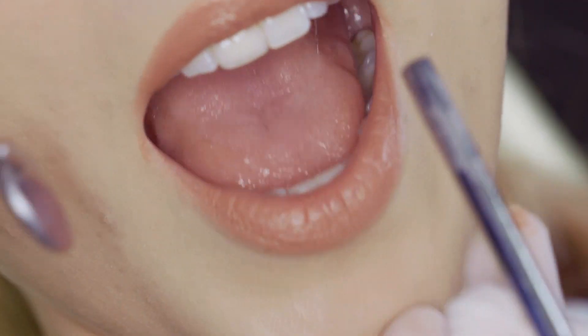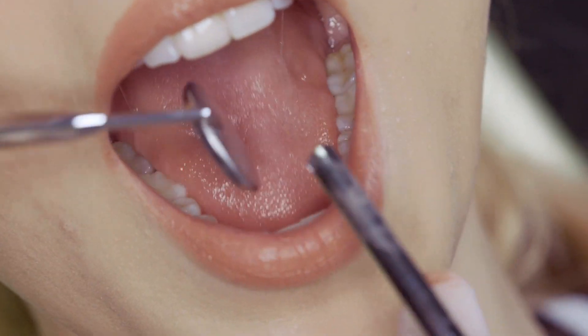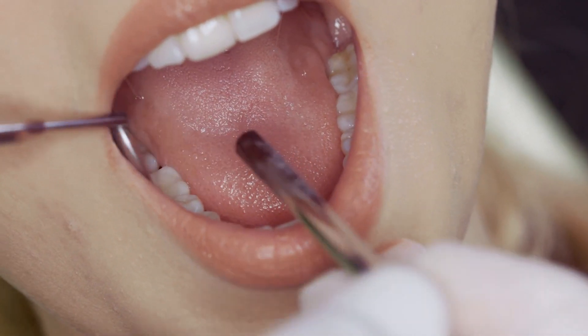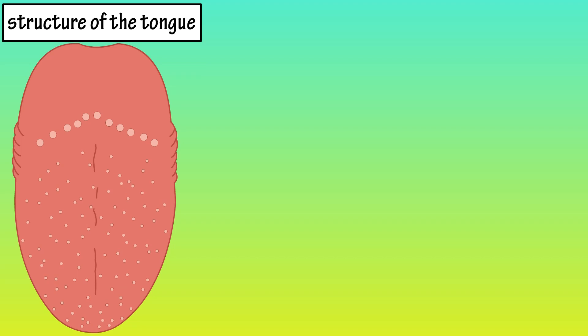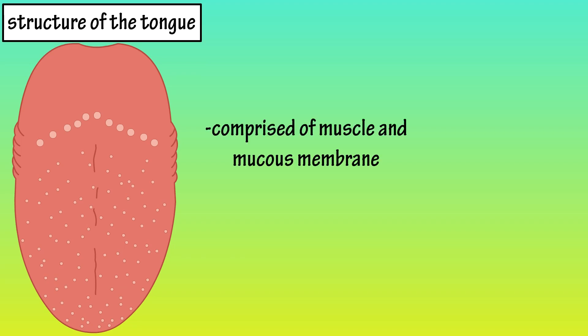The tongue is an important organ in the mouth, as it provides many important functions for your body. The tongue is comprised of skeletal muscle covered by a mucous membrane that helps to keep the tongue moist.